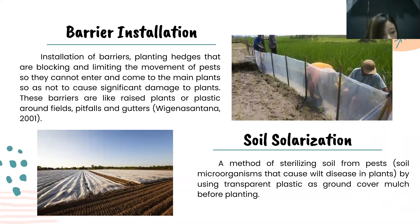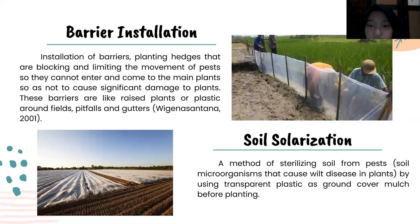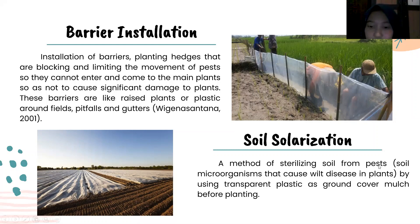The next one is barrier installation — installation of barriers and planting hatches that block and limit the movement of pests so they cannot reach the main plant, so as not to cause significant damage. These barriers are typically made of plants or plastic around pitfall traps and gutters. The next one is soil solidification, a method of sterilizing soil from pests and soil microorganisms that cause disease in plants, by using transparent plastic as a mulch before planting.